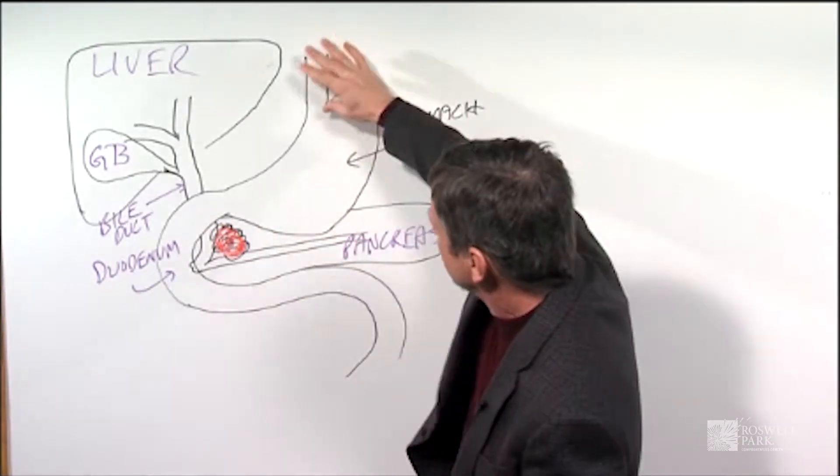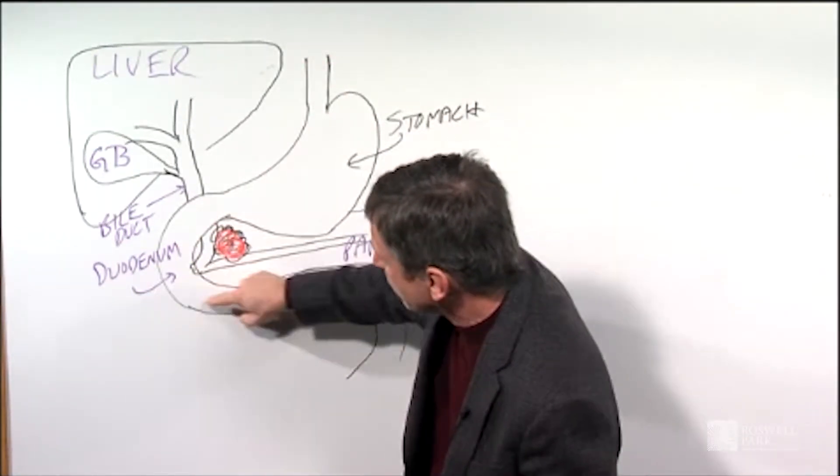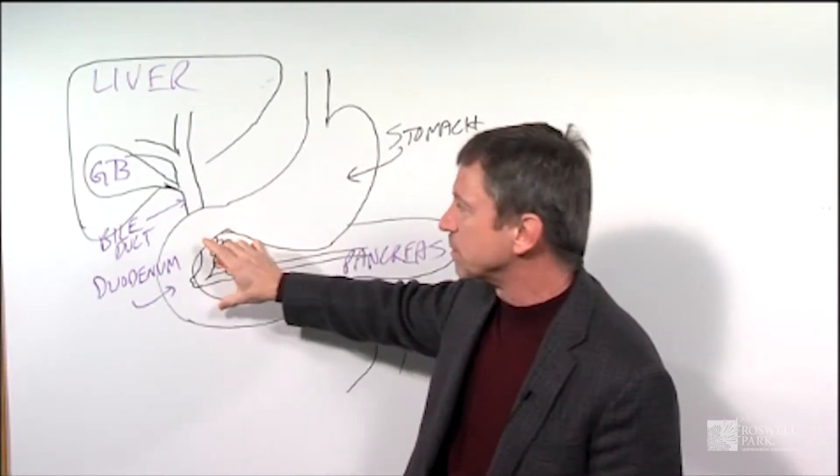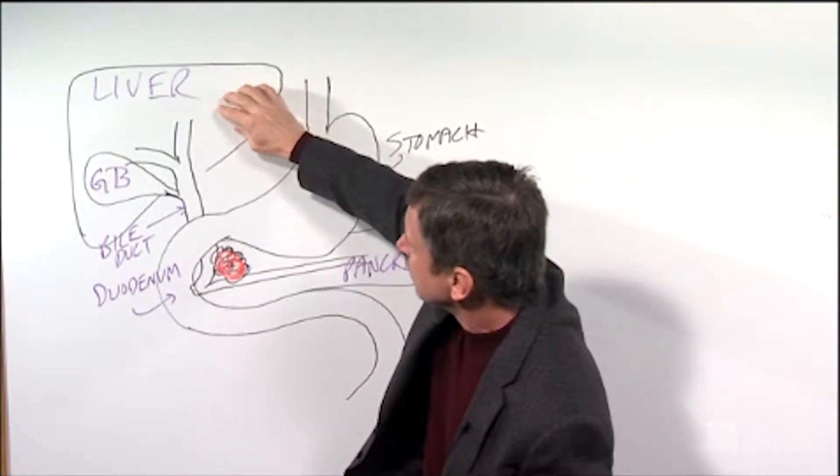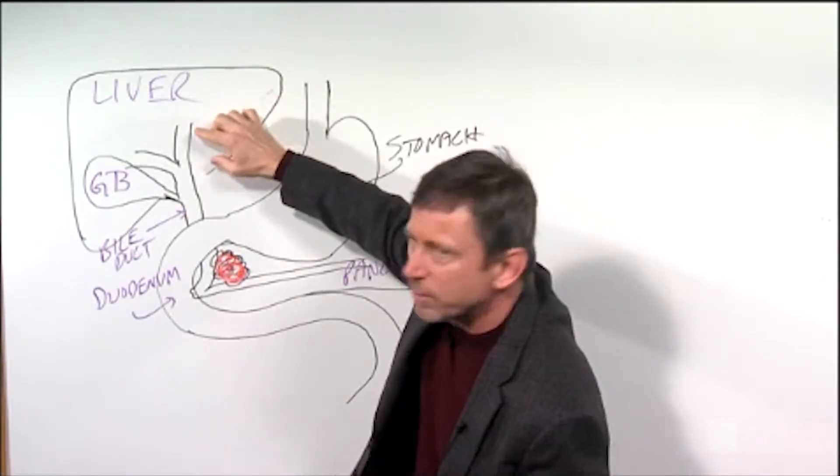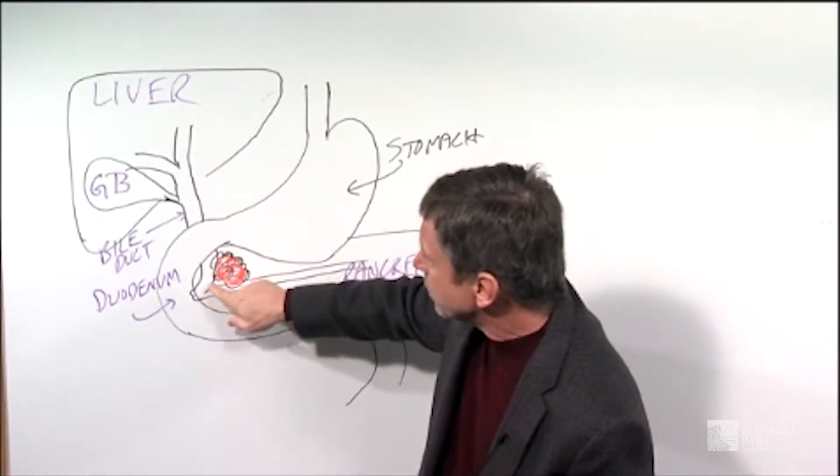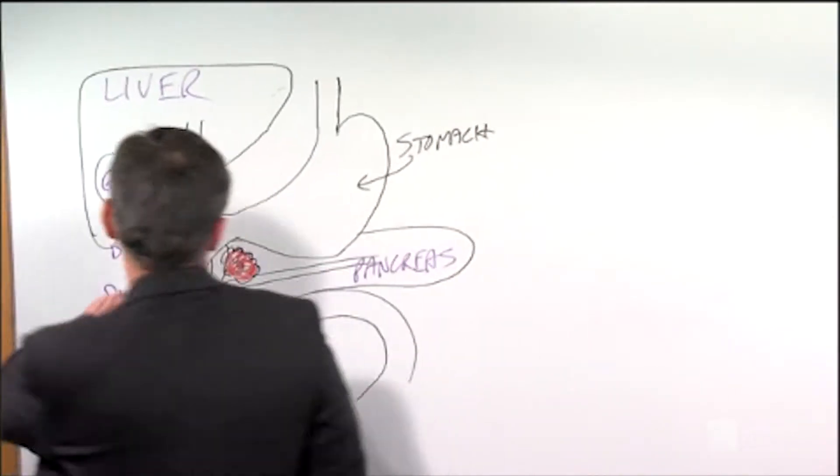This is the pancreas. You see the stomach here. The first part of the intestine is called the duodenum, which is the first 12 inches of the small intestine. The liver I've shown here. The liver makes yellow bile. The yellow bile drains down through the head of the pancreas into the duodenum.